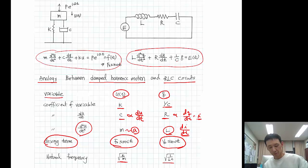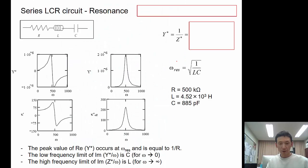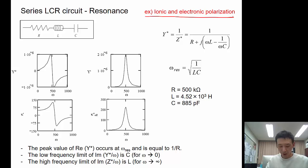We can analyze with the impedance as an equivalent circuit, depending on how they are connected. Here, this is a series LCR circuit. This represents the ionic and electronic polarization. This kind of configuration, like when they are connected in series, they show the resonance response.